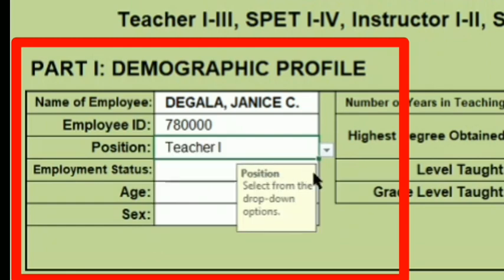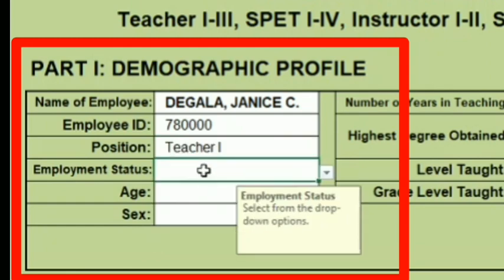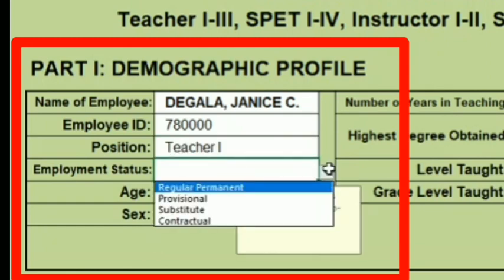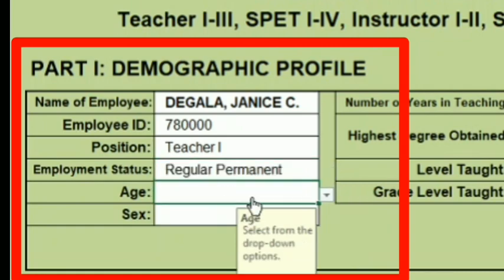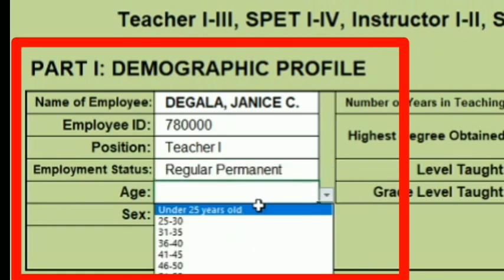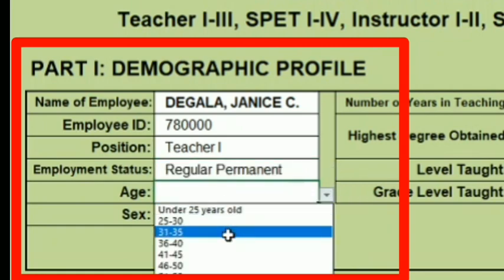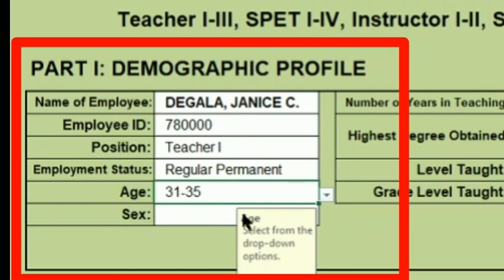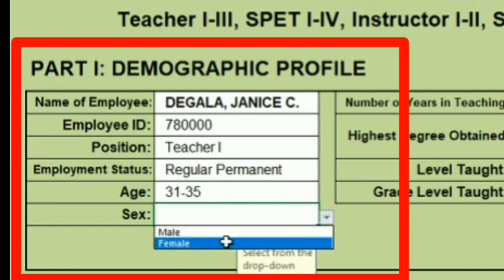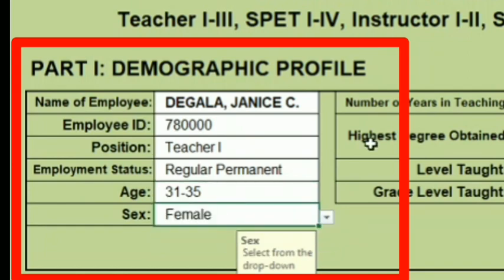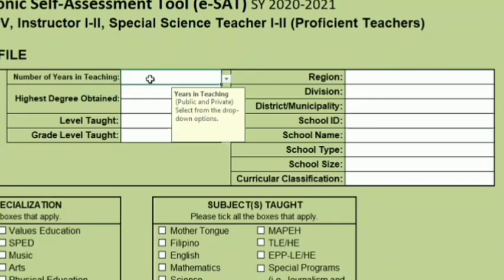Select your employment status by clicking the arrow. Enter your age, then select your gender using the drop-down. Next is the number of years in teaching.